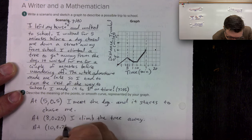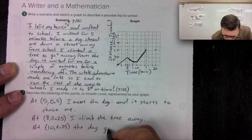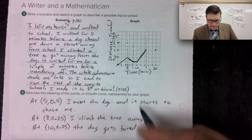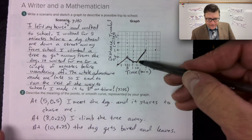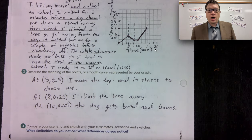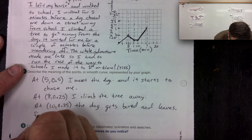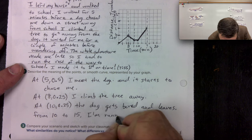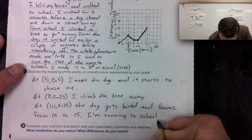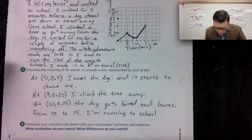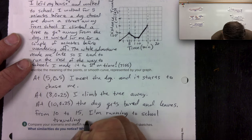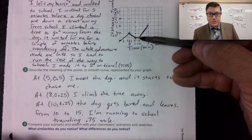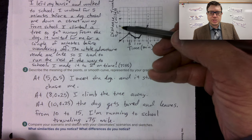At 10 comma 0.25, the dog gets bored and leaves. So that means I can climb down, right? And I can go back. So now I'm talking about this point, this point, and this point. And then finally, I run to school and I make it to school on time at 7:55. So from 10 to 15 minutes, by the way, I'm running to school. And I travel three quarters of a mile. Now I know it's three quarters of a mile because from here at a height of 0.25 miles to here, that was the three quarters in distance. So there you have it.